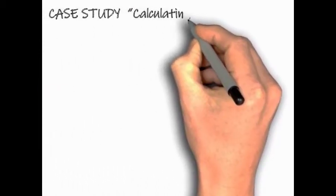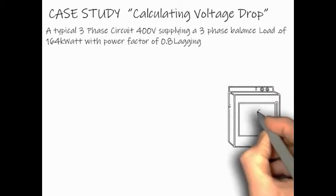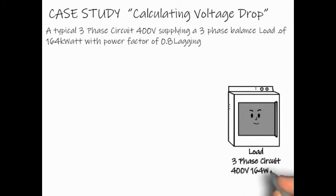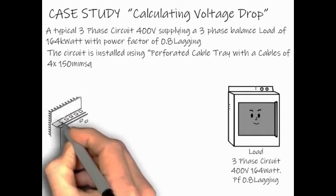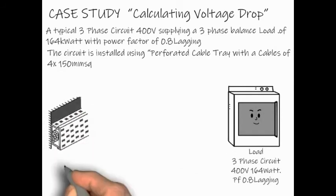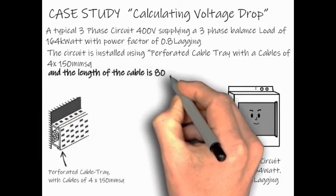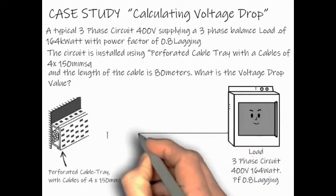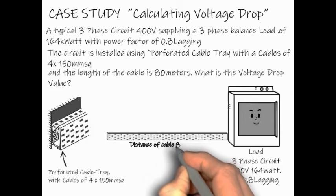Next, we're going to do a case study on calculating the voltage drop using an illustration of a typical three-phase circuit. For 400 volts, supplying a three-phase balanced load of 164 kilowatts with a power factor of 0.8 lagging. The circuit is installed using a perforated cable tray with a cable of 4 by 150 mm squared. The length of the cable is 80 meters. So the question is, what is the voltage drop value?